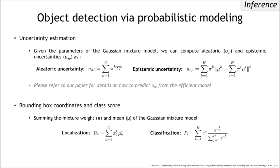Given the parameters of a Gaussian mixture model, we can compute aleatoric uncertainty using pi and sigma, and we can compute epistemic uncertainty using pi and mu parameters. We compute bounding box coordinates and class scores of the proposed model by summing the pi and mu parameters.